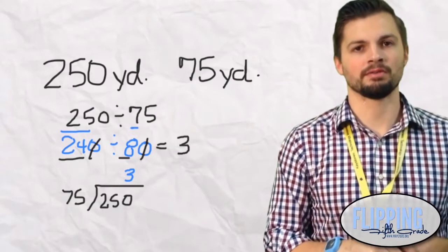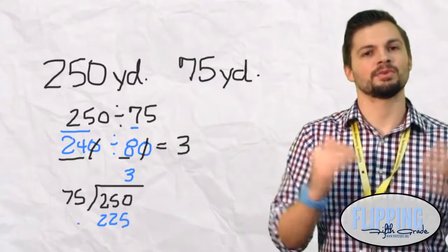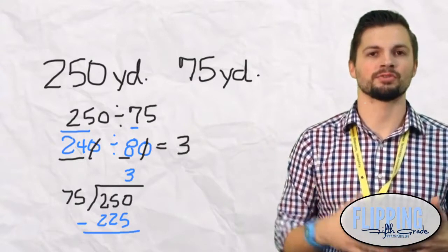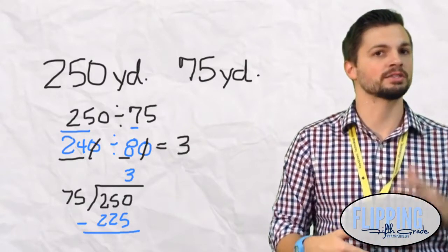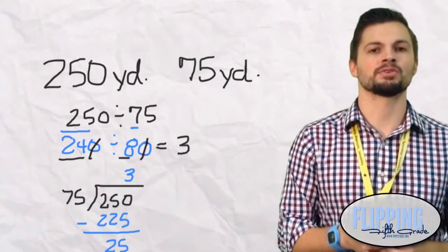3 times 75 is going to give us 225. Good job. Now we just subtract. Remember the song. First you must divide, then you multiply and subtract. So we take 250 minus 225. That is going to give us 25.